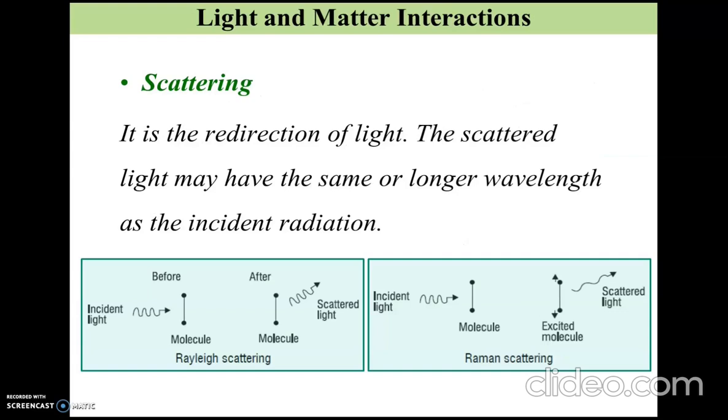Another kind of interaction which is quite common between light and matter is scattering of light. Scattering of light is the redirection of light from the direction of its motion. Commonly you can encounter two types of scattering: one is Rayleigh scattering shown in the left here, and the other one is Raman scattering.